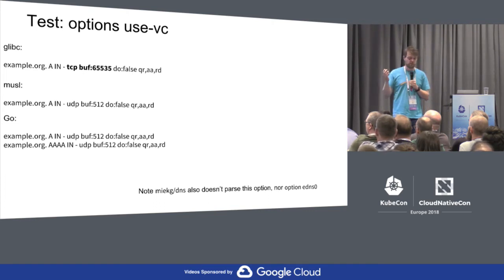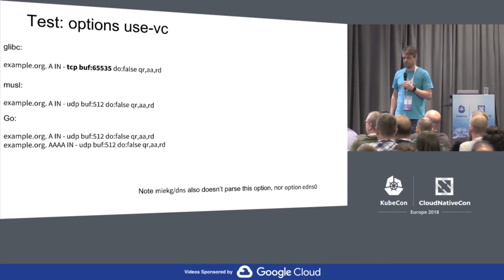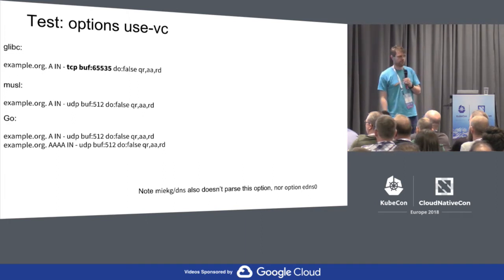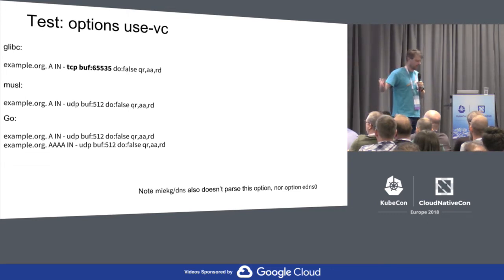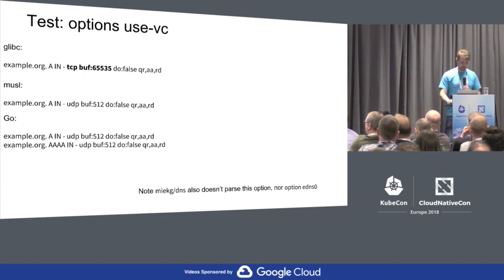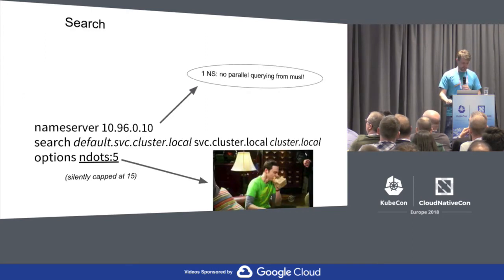use-vc: yes, glibc does TCP right away. I think it will still do one TCP connection per request, which is expensive. The other ones will still use UDP. Note that my DNS library also ignores this option — that's why Go doesn't do it; Go has its own implementation. So yeah, only in glibc is there some use for these options. I haven't found any option that musl or Go does that glibc doesn't.